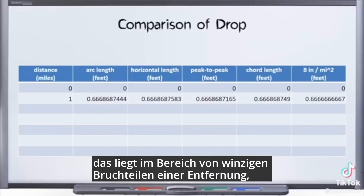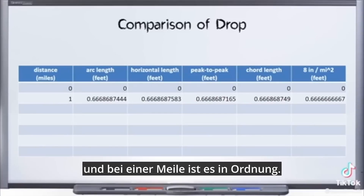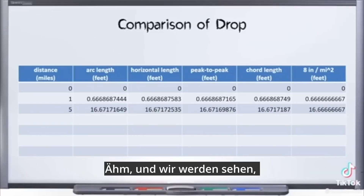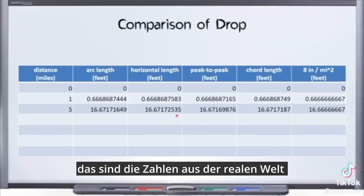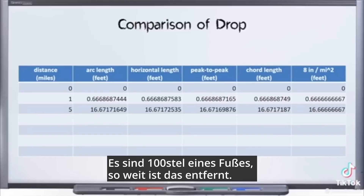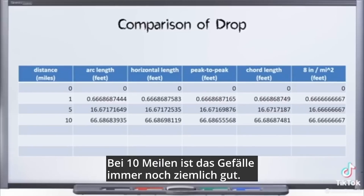That's within tiny fractions of a distance. So at one mile, it's fine. Let's go five miles. We'll see these are the real world numbers and here's the approximation — that's still pretty darn good. A hundredth of a foot is how far off that is.